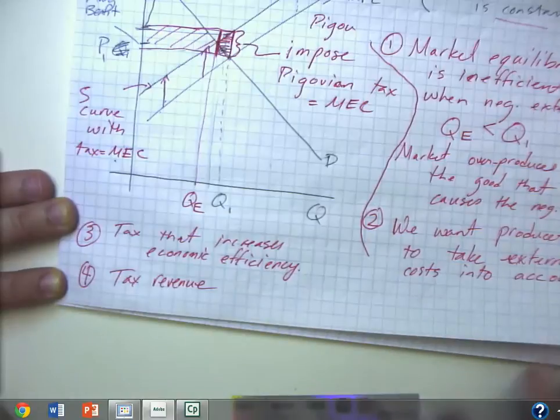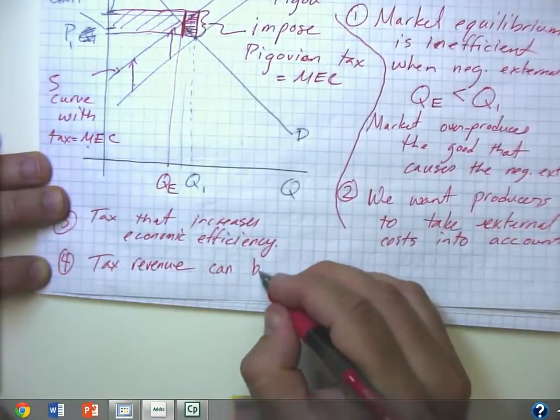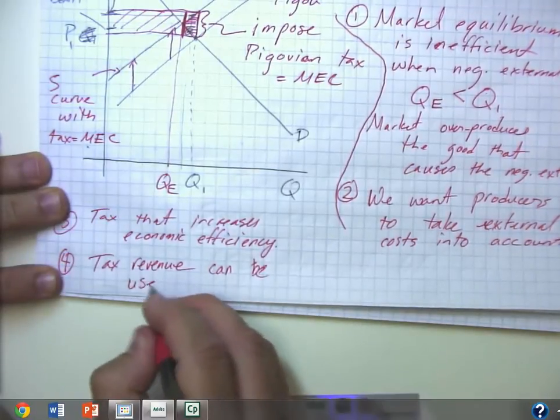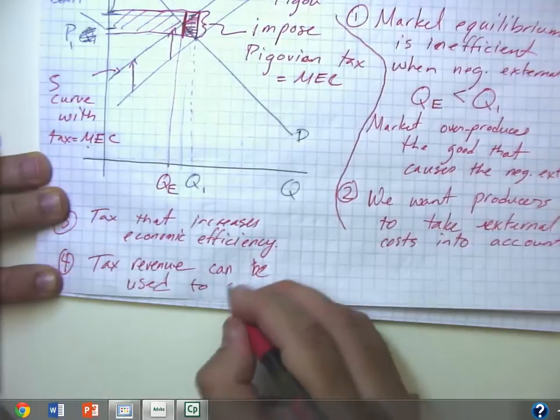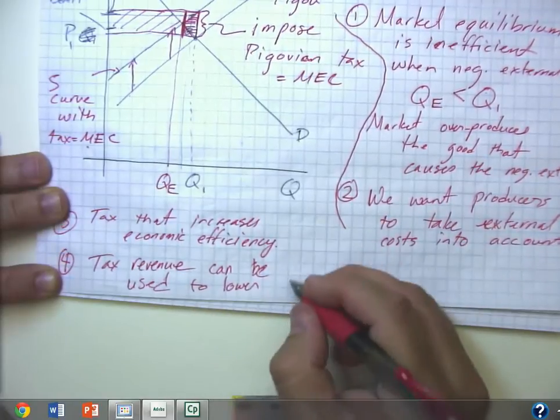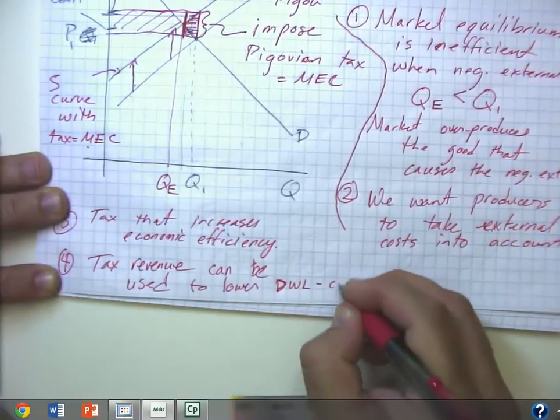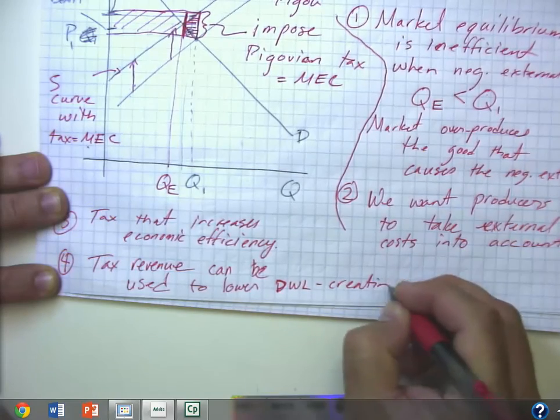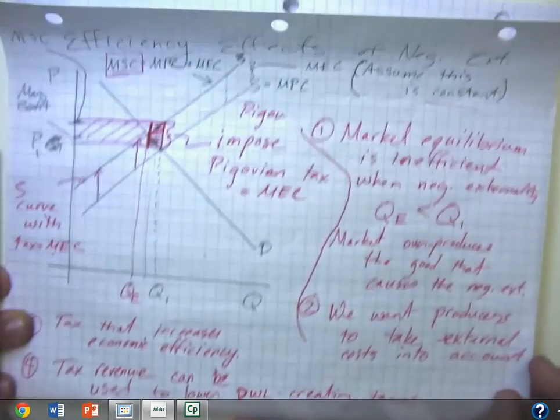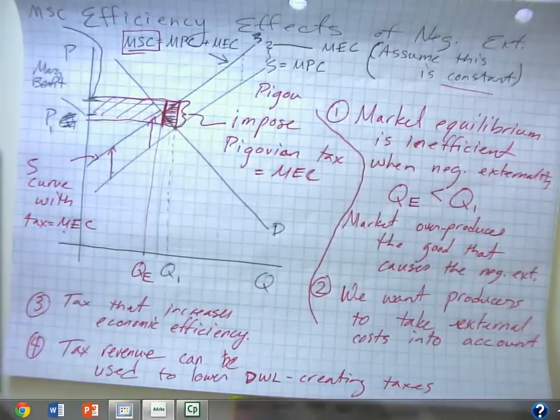And the nice thing that we could do with that tax revenue is we can use that to lower other taxes that have deadweight loss associated with them.